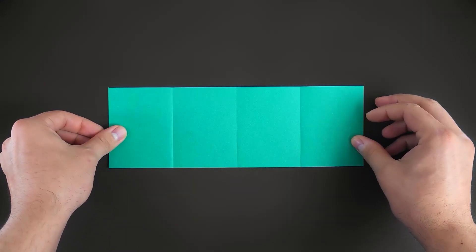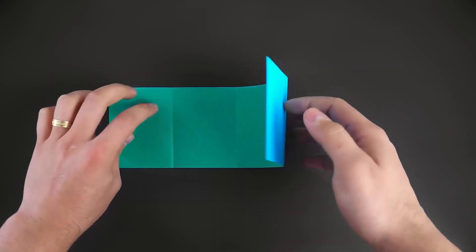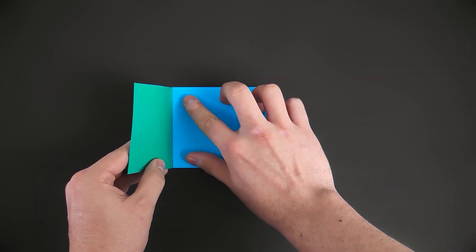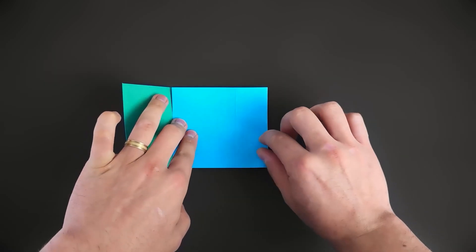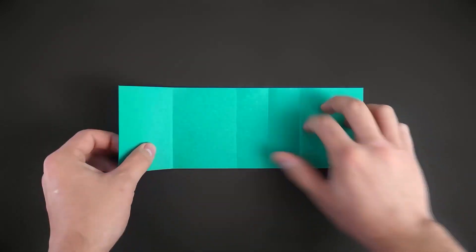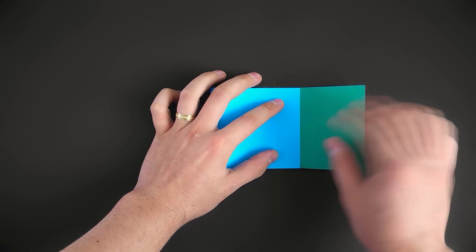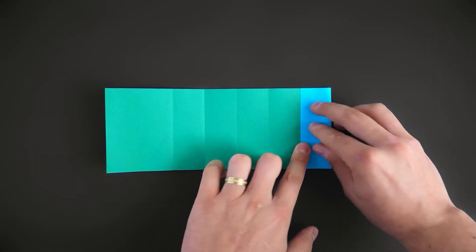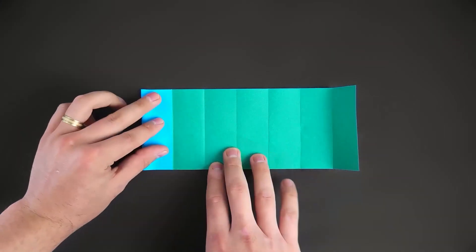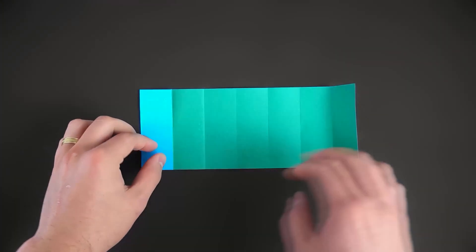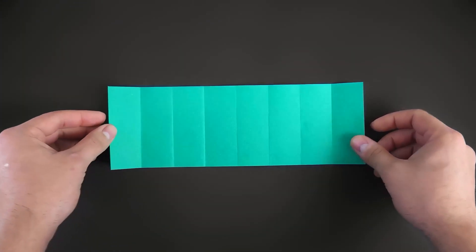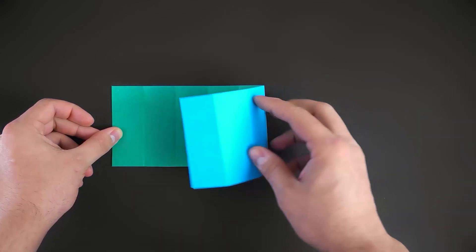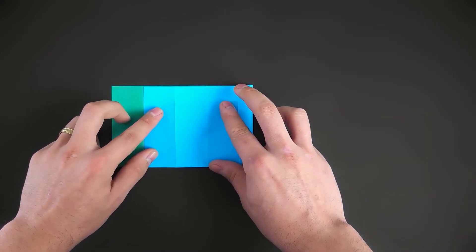Next, fold each of those sections in half, making 8, and then fold each one of those in half again, making a total of 16 sections.